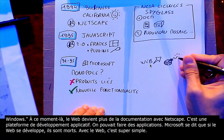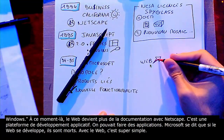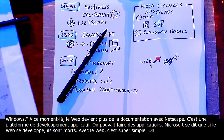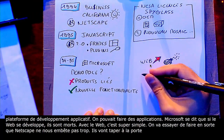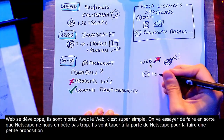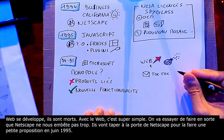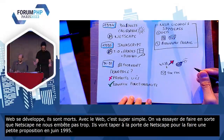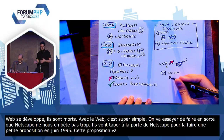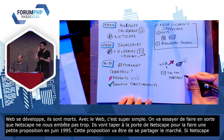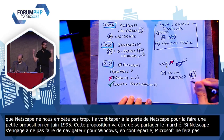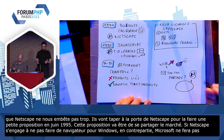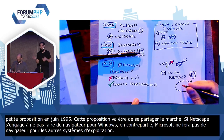Ils vont taper à la porte de Netscape pour leur faire une petite proposition en juin 1995. Cette proposition — qu'ils ont déjà faite à plein d'autres entreprises — ça va être une proposition de se partager le marché : si Netscape s'engage à ne pas faire de navigateur pour Windows, Microsoft ne fera pas de navigateur pour les autres systèmes d'exploitation. Évidemment, et heureusement, Netscape a refusé. Je précise au passage, évidemment, c'était méga illégal.